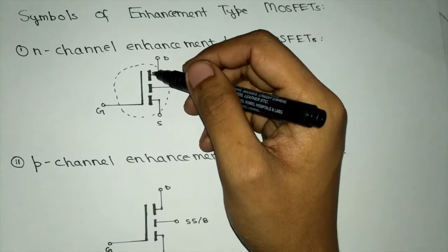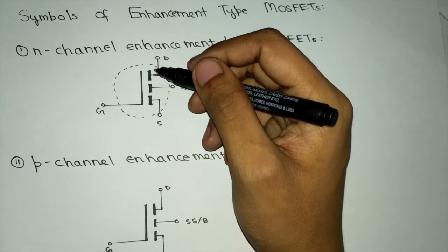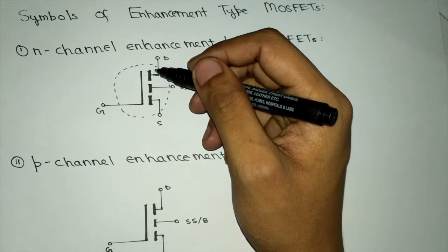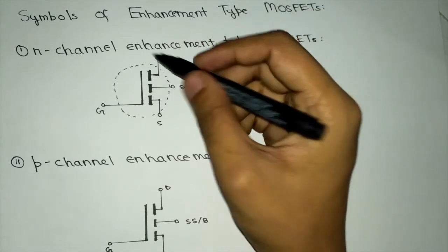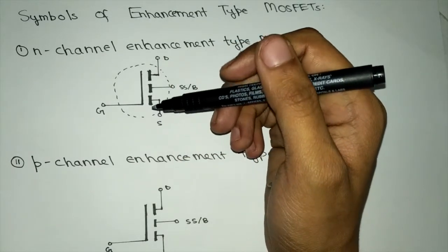When a certain VGS is provided, then due to induction an N channel is formed. Thus, this is the representation of the enhancement type MOSFET.